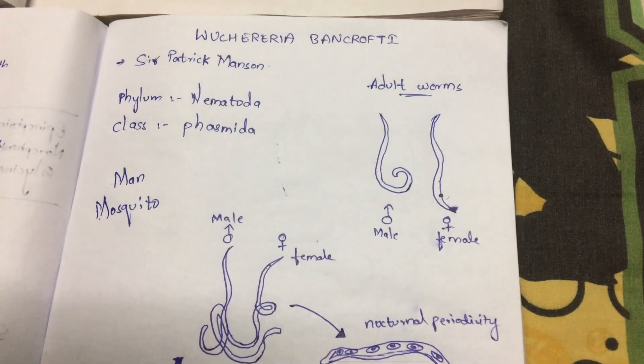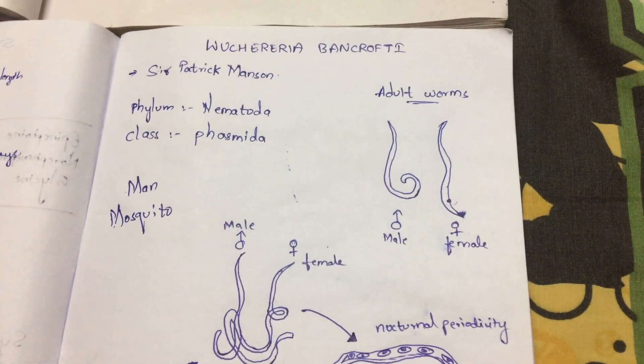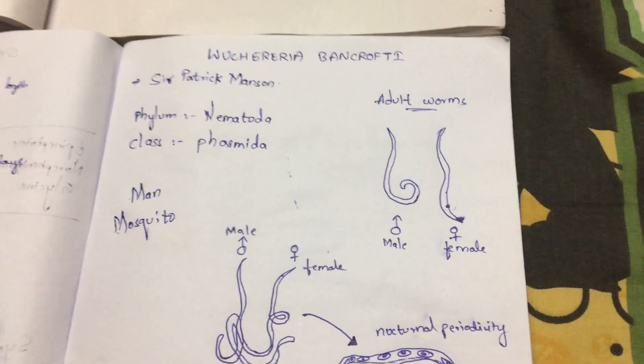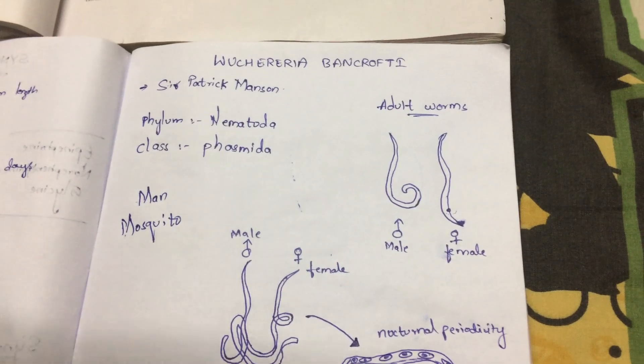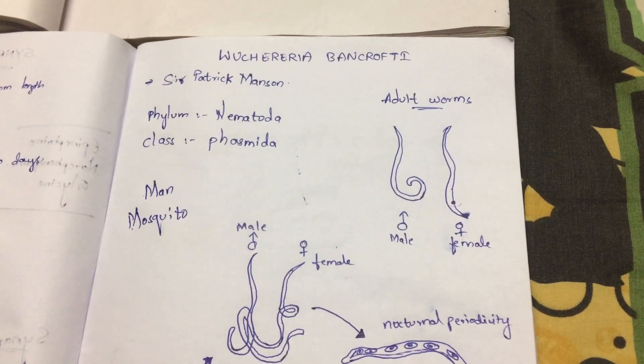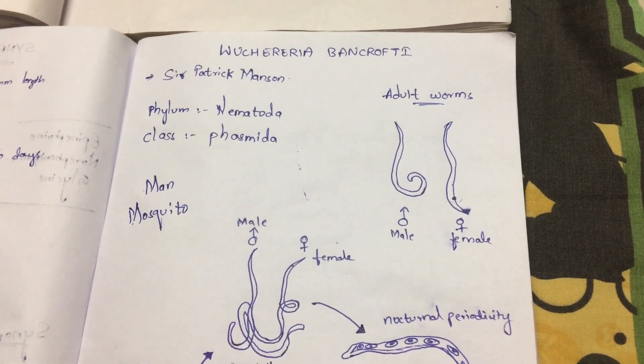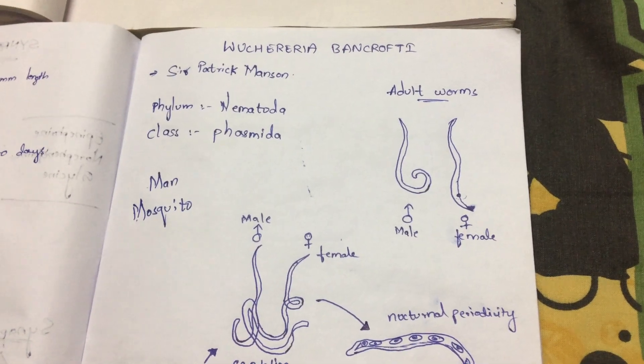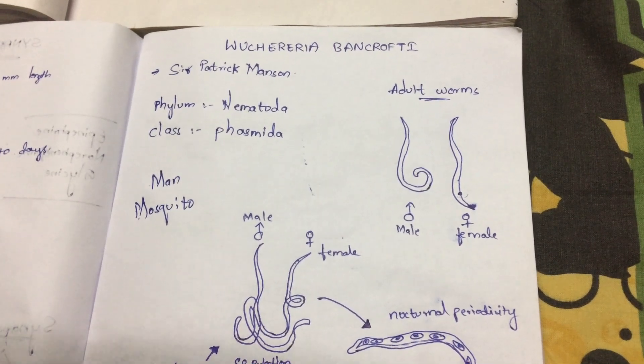Hello friends, my name is Farindra. Today I am going to show you a topic about Wuchereria bancrofti. This Wuchereria bancrofti mainly undergoes a cycle, and this cycle was mainly discovered by Sir Patrick Manson.